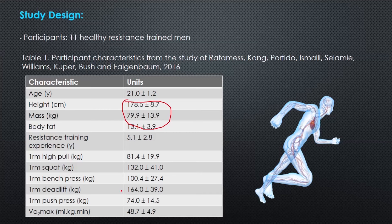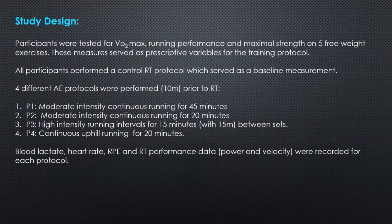There were also big differences in strength. Looking at VO2 max, participants had a value of 48.7 mL per kg per minute. Comparing against elite athletes who are often 80 or above, these participants were not aerobically fit, which may have impacted how much fatigue was encountered during aerobic activity. All results from the VO2 max test, running performance, and maximum strength on five free-weight exercises served as prescriptive variables for the training protocol.